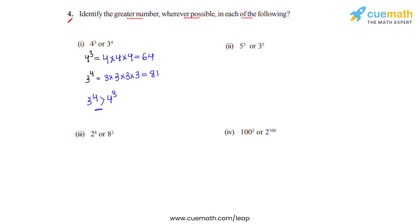Going on to the second bit, we have 5 raised to 3 or 3 raised to 5. We will expand 5 raised to 3 first — that is, 5 is to be multiplied 3 times. We know that 5 fives are 25, and 25 times 5 is 125.